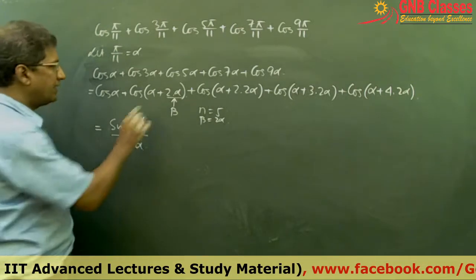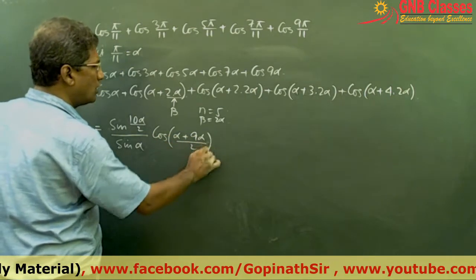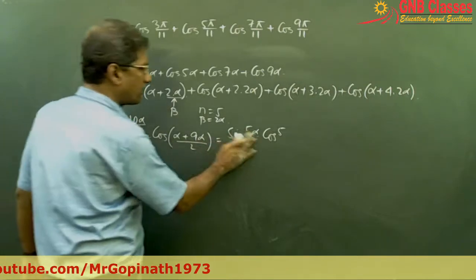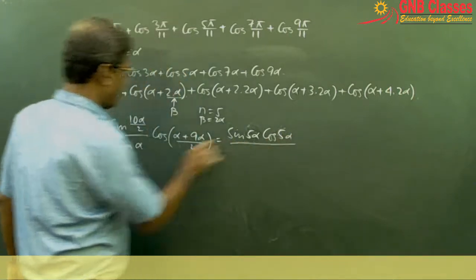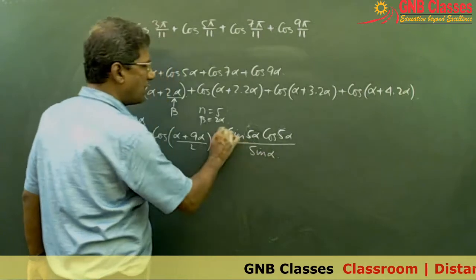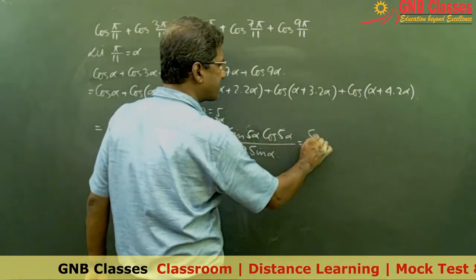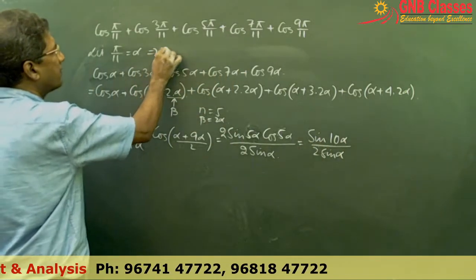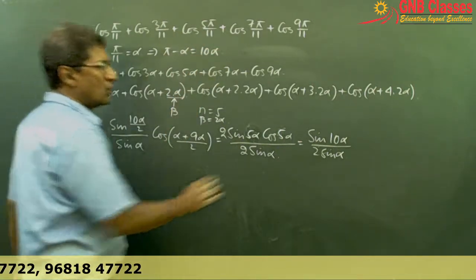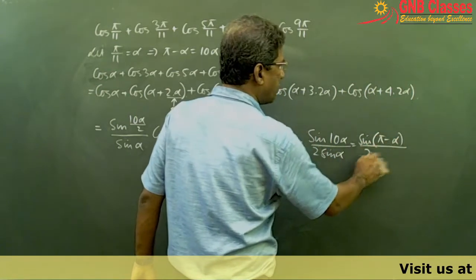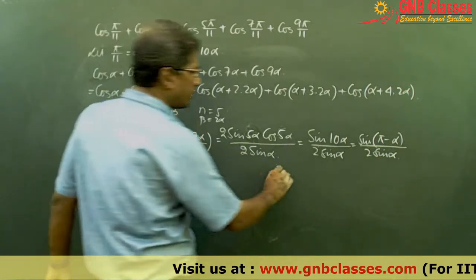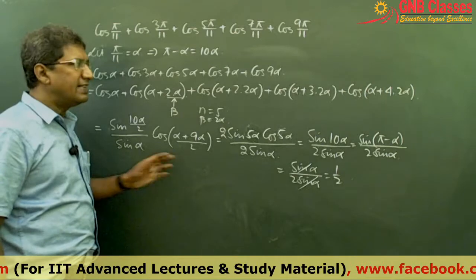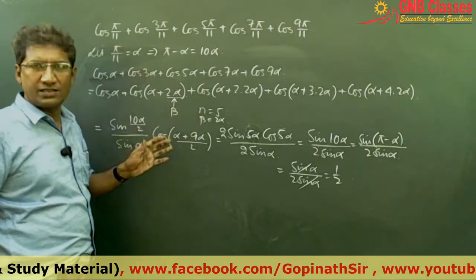According to our cosine series formula, we write sin(nβ/2) divided by sin(β/2), multiplied by cos of (first plus last angle divided by 2). This gives sin(5α) times cos(5α) divided by sin α. Multiplying numerator and denominator by 2, the numerator becomes sin(10α) and the denominator becomes 2 sin α. Now 10α equals π minus α, so sin(π minus α) equals sin α. Therefore sin α divided by 2 sin α gives the answer as one half.